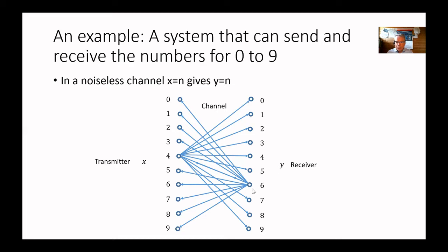And also, if you receive six, there is a certain probability that it was a zero, or a one, or a two, or a three, or a four, up to nine that was originally sent.